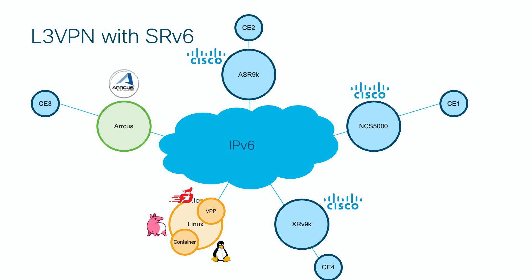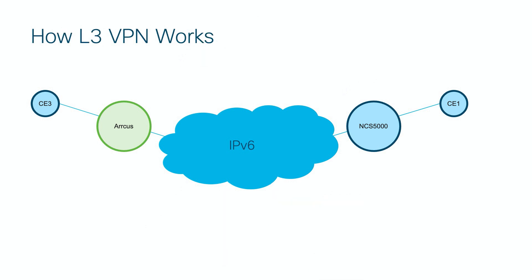First things first, let's explain how Layer 3 VPN with SRv6 micro-SID works. For this explanation we will simplify our topology and show it on two routers only. We already know that each PE in the SRv6 network has its own locator, and that locator is advertised into the IGP protocol, so every device in the network knows how to reach those prefixes. Our locators are from unique local address space, but they can very well be from global address space.